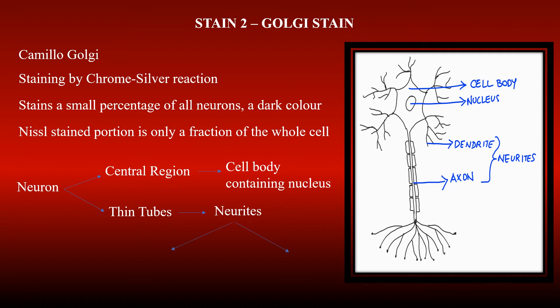These neurites are of two types. One is the axon, which extends for longer distances and therefore must carry output information. The other is dendrites, which are shorter and come in contact with many axons, so they must receive input information.